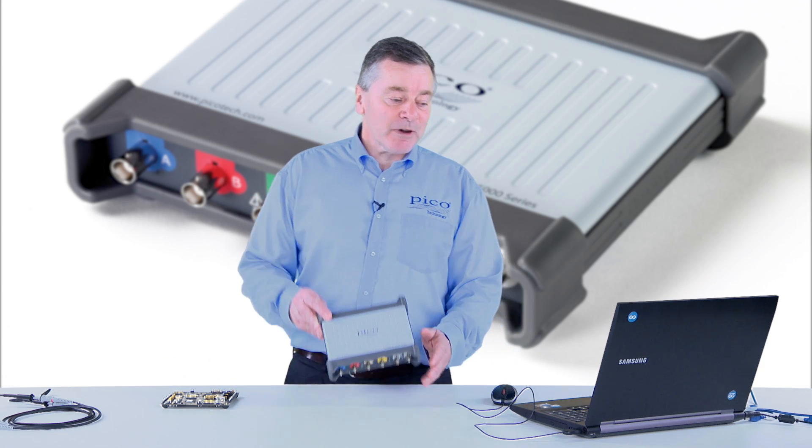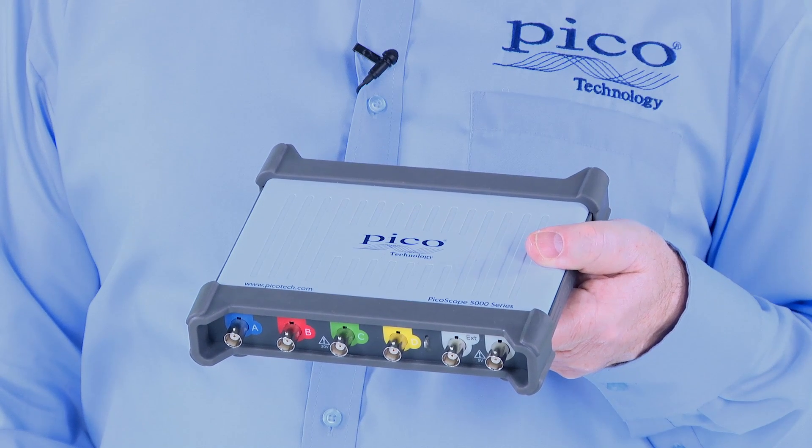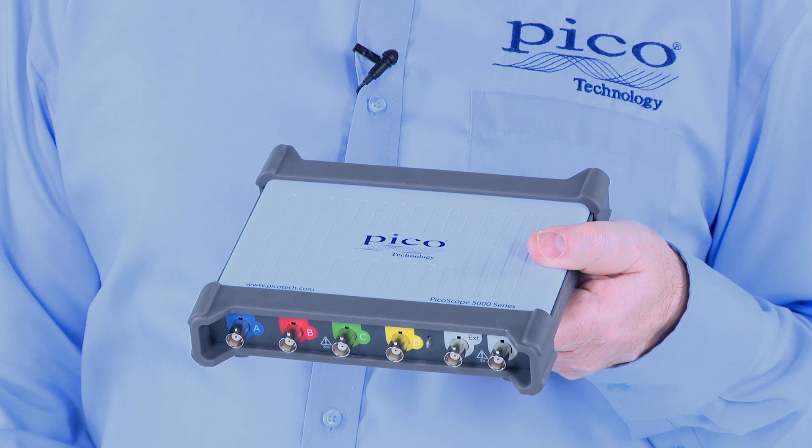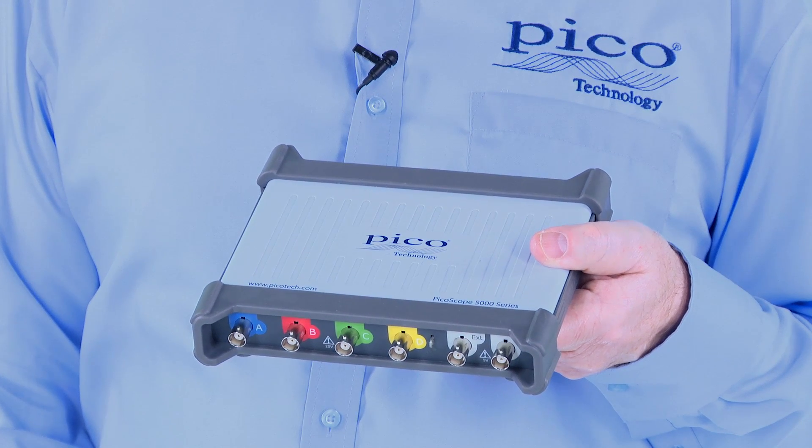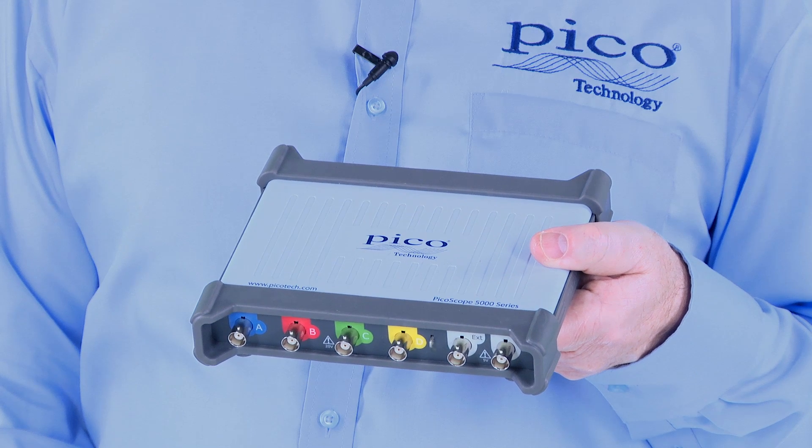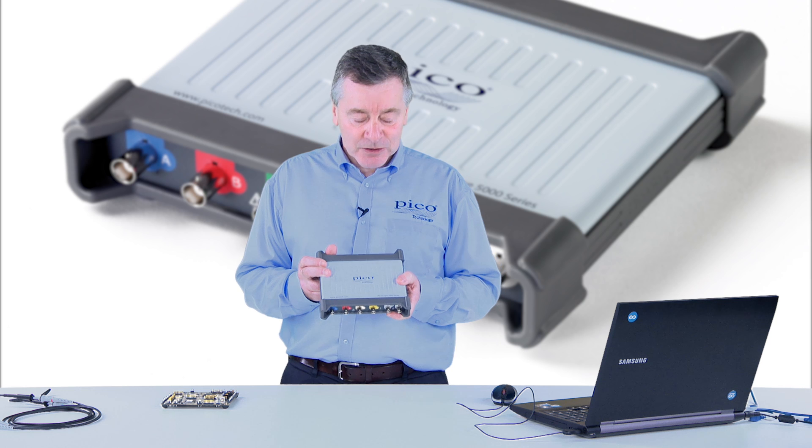The PicoScope 5000 is the first flexible resolution oscilloscope that can make 8, 10, 12, 14, 15 or even 16-bit resolution measurements. Changing from one resolution to another is a simple user control that can be selected from the soft front panel.